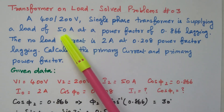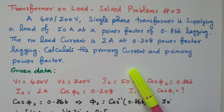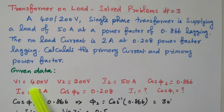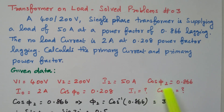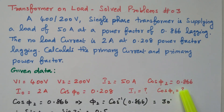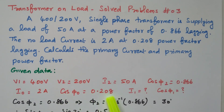The 50 ampere is the current taken at full load condition, and 2 ampere is the current taken at no load condition. Analyzing the given data: primary voltage V1 = 400 V, secondary voltage V2 = 200 V, full load current I2 = 50 A with power factor cos φ2 = 0.866 lagging. No load current I0 = 2 A with power factor cos φ0 = 0.208 lagging. We need to find the primary current I1 and primary power factor cos φ1.